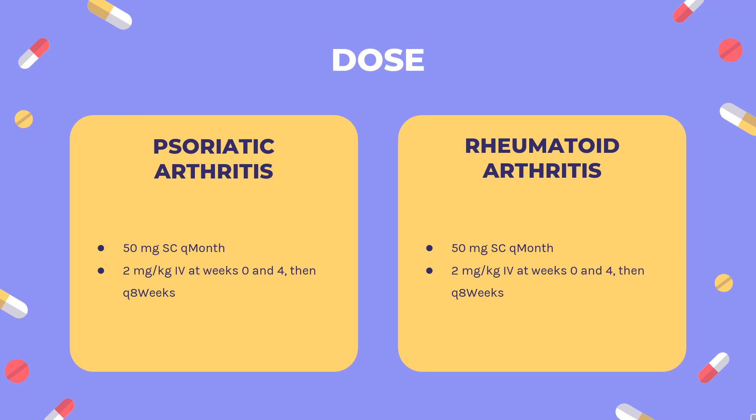Corticosteroids, nonsteroidal anti-inflammatory drugs (NSAIDs), and/or analgesics may be continued during treatment. Ankylosing spondylitis: Indicated for active ankylosing spondylitis with or without methotrexate. Simponi: 50 mg SC every month. Simponi Aria: 2 mg/kg IV at week 0 and 4, then every 8 weeks. Corticosteroids, NSAIDs, and/or analgesics may be continued during treatment.